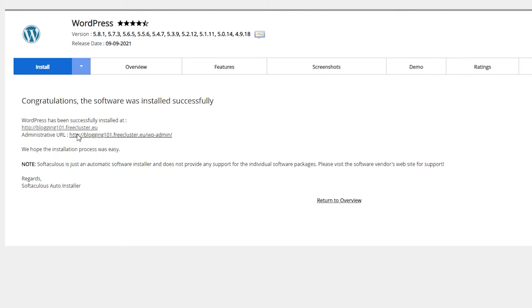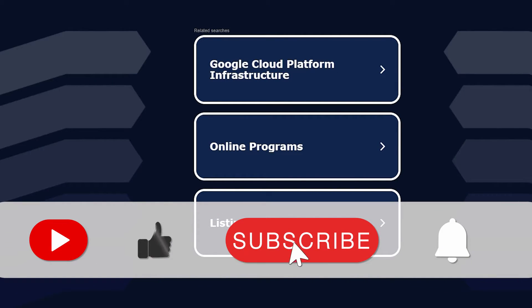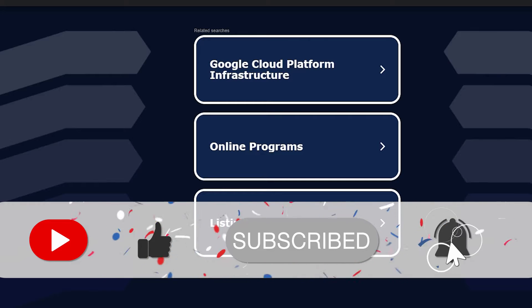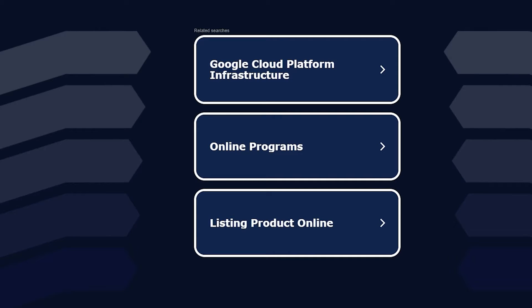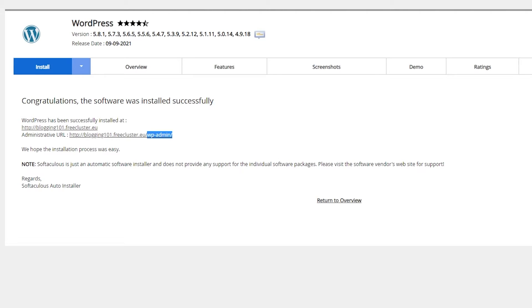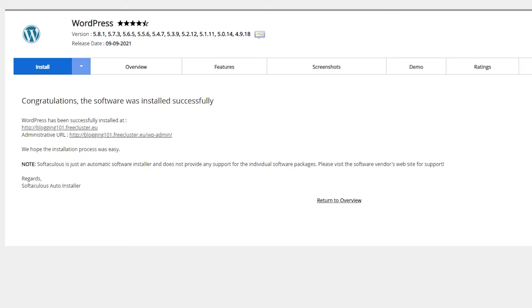Clicking the administrative URL takes me to the WordPress sign-in page. If you see something else, your URL may have gotten mixed up — remove everything and make sure the URL is exactly correct. This is a bit unusual, but if it keeps happening you can type the URL in yourself.